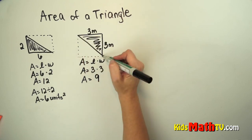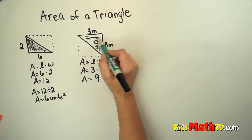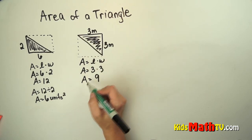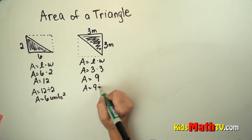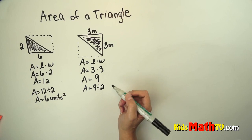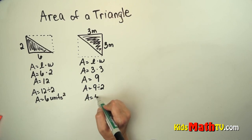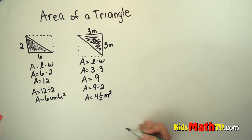But that's the area of the whole rectangle, or in this case the whole square. I only want this half, this half of the rectangle, which is a triangle. So I'm going to do 9 divided by 2. If I divide 9 by 2, I get 4 and a half square meters.